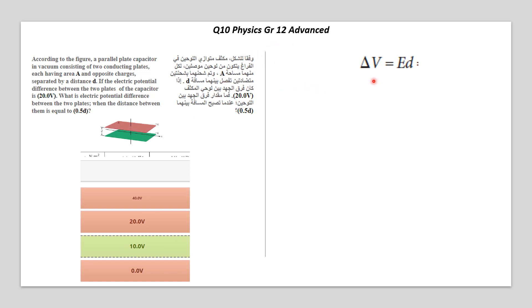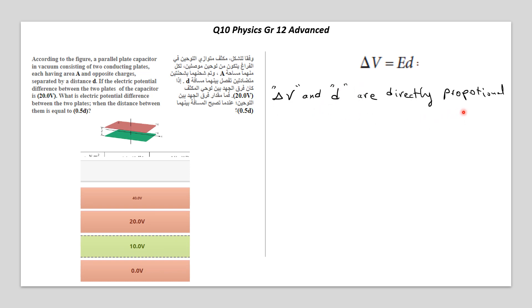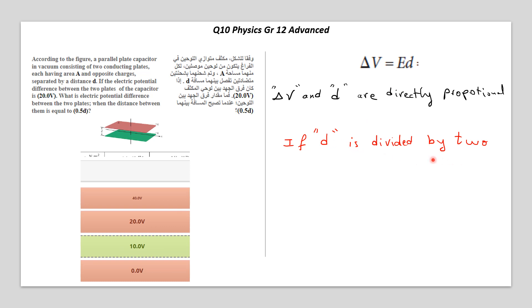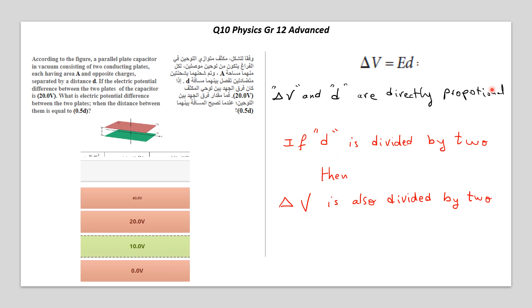What do you notice about delta V and D? They are directly proportional. So if D is cut in half — if we divide the distance by 2 — the same thing should happen to delta V. Because they are directly proportional: if we divide the first, the second will follow. So delta V should also be divided by 2.